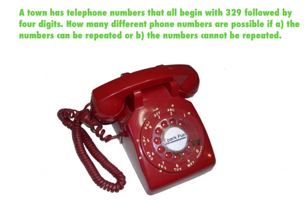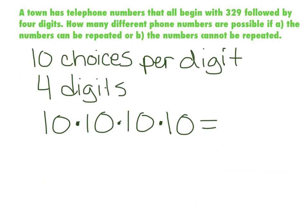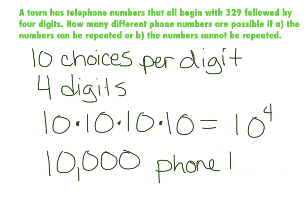1, 2, 3, 4, 5, 6, 7, 8, 9, and 0. So we've got 10 choices per digit. We have four digits to fill in. So what we're going to do is 10 choices for the first one times 10 for the second times 10 for the third times 10 for the fourth. When we do 10 times 10 times 10 times 10, which is the same thing as 10 to the fourth, that gives you 10,000 different phone numbers.